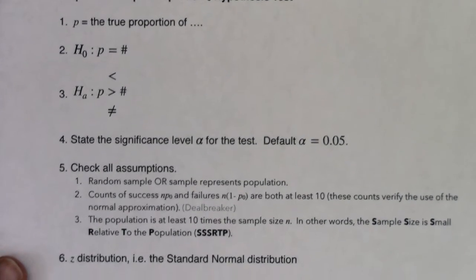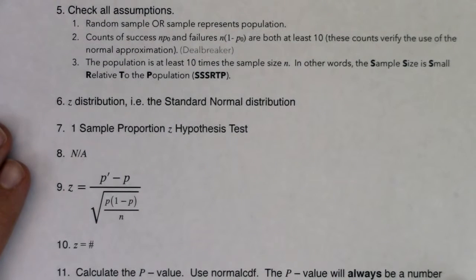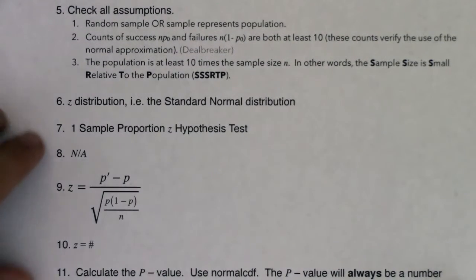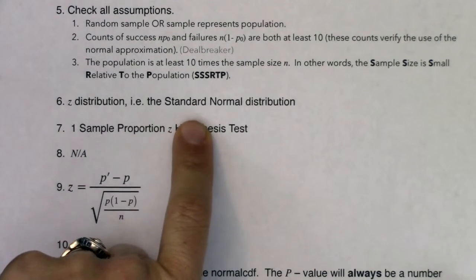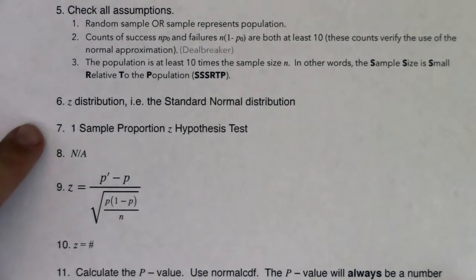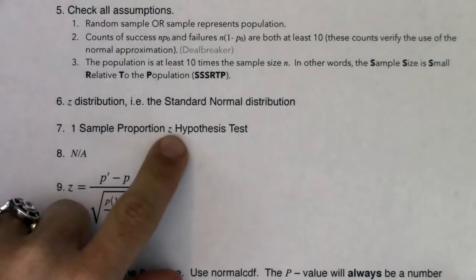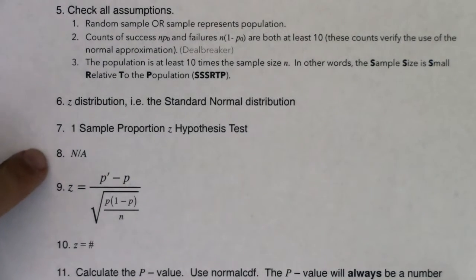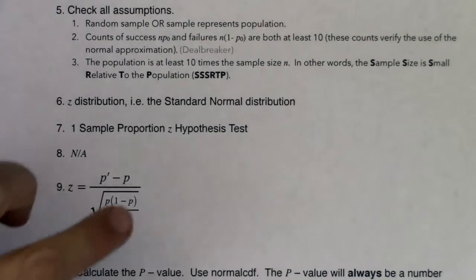When it comes to the middle steps, let's start on step six. You're going to tell me the name of the distribution. You can either say the z distribution or the standard normal distribution — those are the same thing. Give me the name, the number of samples, what land you're in, and what letter you're using. There are no degrees of freedom in proportion land; it's the only land where there's no degrees of freedom. Step nine will have the formula for your test statistic. This will always be the formula.